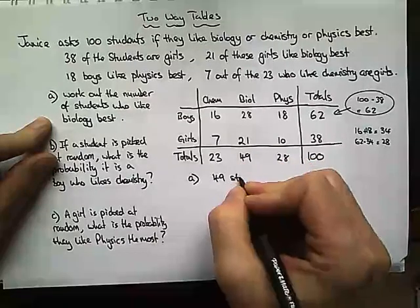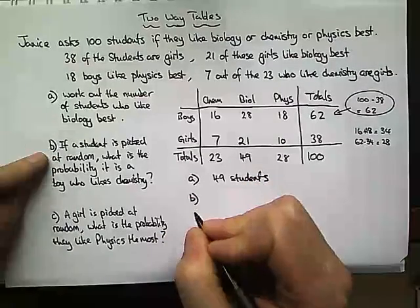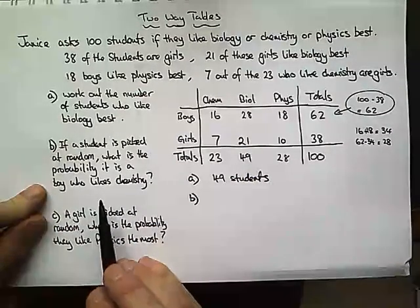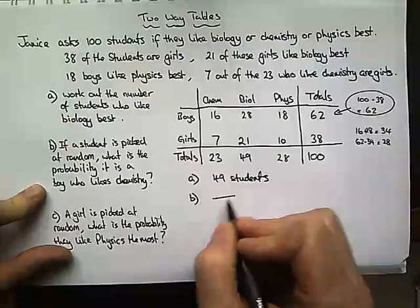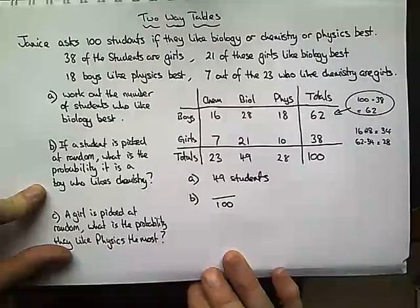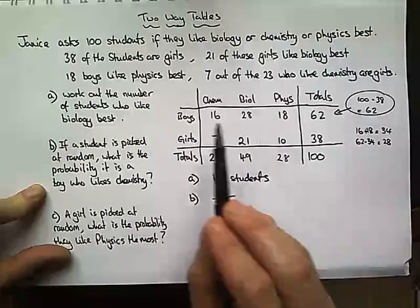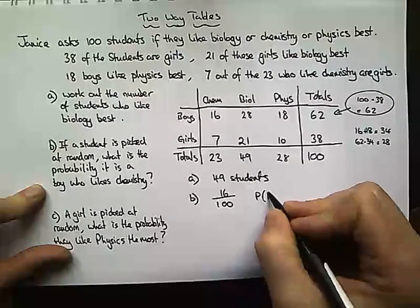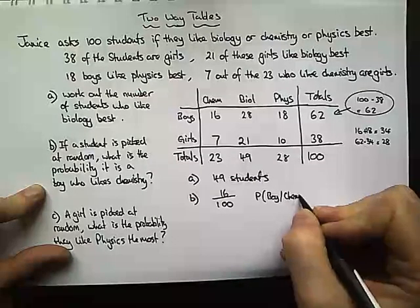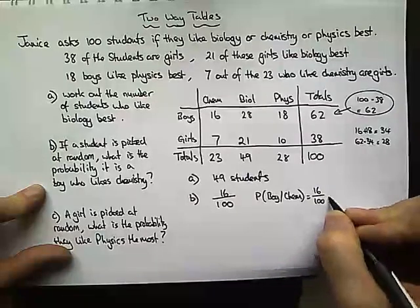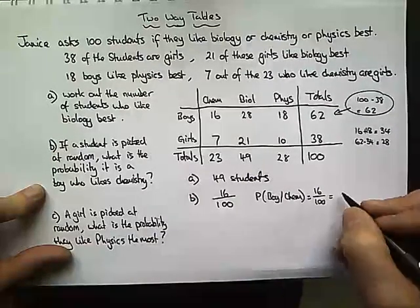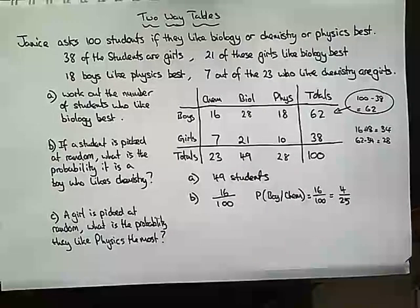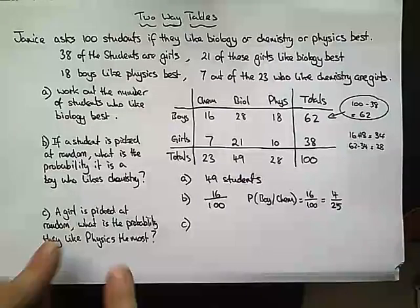If a student is picked at random — there are 100 in total — what is the probability it is a boy who likes chemistry? Because we're picking out of 100, we write this as a fraction out of 100. Boys and chemistry gives us 16, so the probability equals 16 out of 100. We can simplify by dividing top and bottom by 4 to get 4 out of 25, or 0.16.